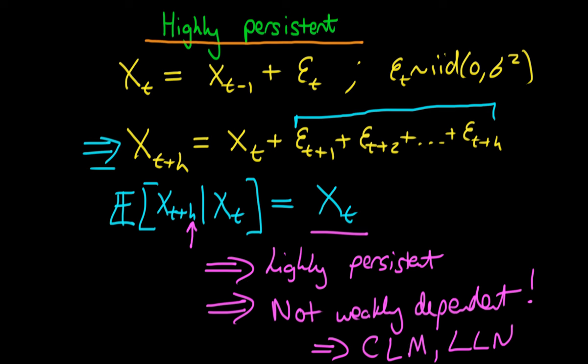So how can we actually deal with this? If we notice Xt up here, what would happen if I was to take Xt minus 1 over to the other side?